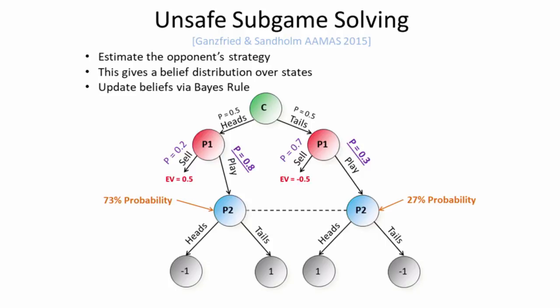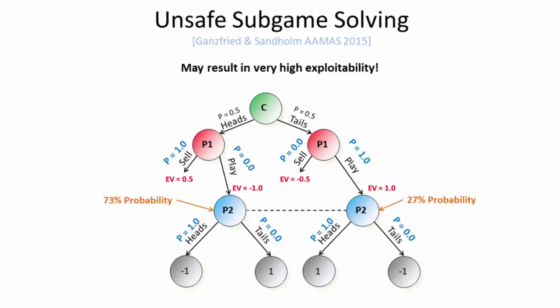So we're going to update our beliefs and say that now there's a 73% probability that we're in the left node and a 27% probability that we're in the right node. And now we're going to determine an optimal strategy that responds to this belief distribution. But in that case, the optimal strategy would be to guess heads with 100% probability. And we've already established that that's a really bad strategy because player one could simply adapt by shifting to a different strategy. So you can't make assumptions about how the opponent is going to play because they could always switch to a different strategy. In fact, unsafe sub-game solving can lead to very high exploitability both in theory and in practice.